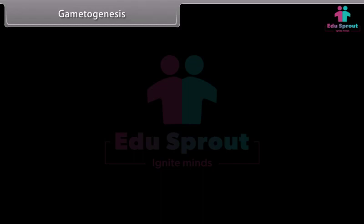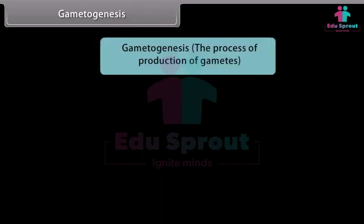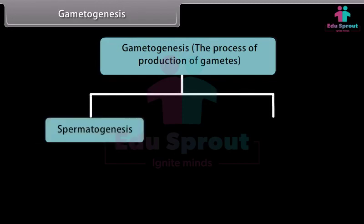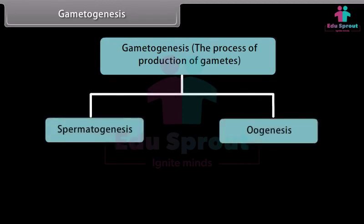Gametogenesis is the process of production of gametes. Males and females of a species have different forms of gametogenesis — spermatogenesis in males and oogenesis in females.